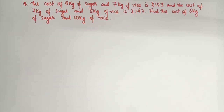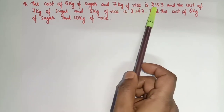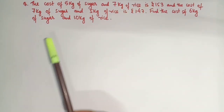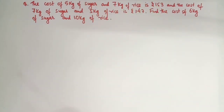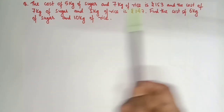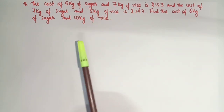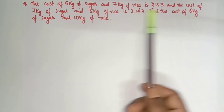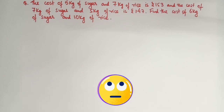This is one of the very important questions. The cost of 5 kg sugar and 7 kg rice is 153 rupees. Suppose you went to the market and bought 5 kg sugar and 7 kg rice and paid 153 rupees. Another day you bought 7 kg sugar and 5 kg rice for 147 rupees. Now they have asked: what is the cost of 6 kg sugar and 10 kg rice? We don't know the cost of 1 kg sugar and 1 kg rice, so first we will find those.